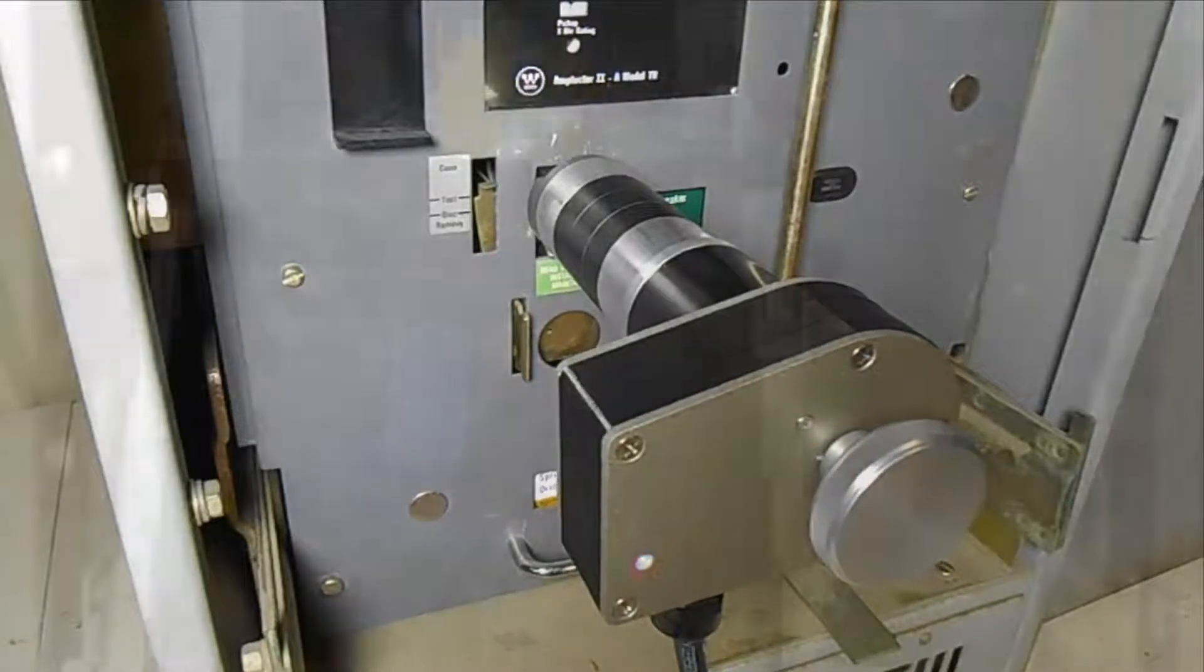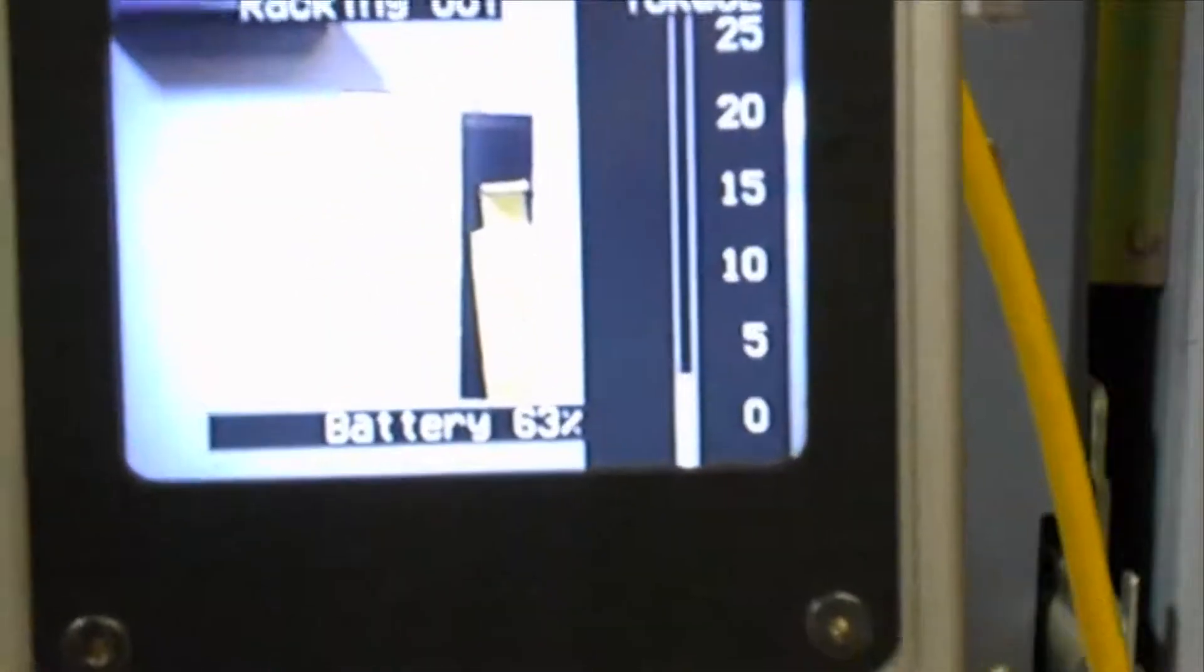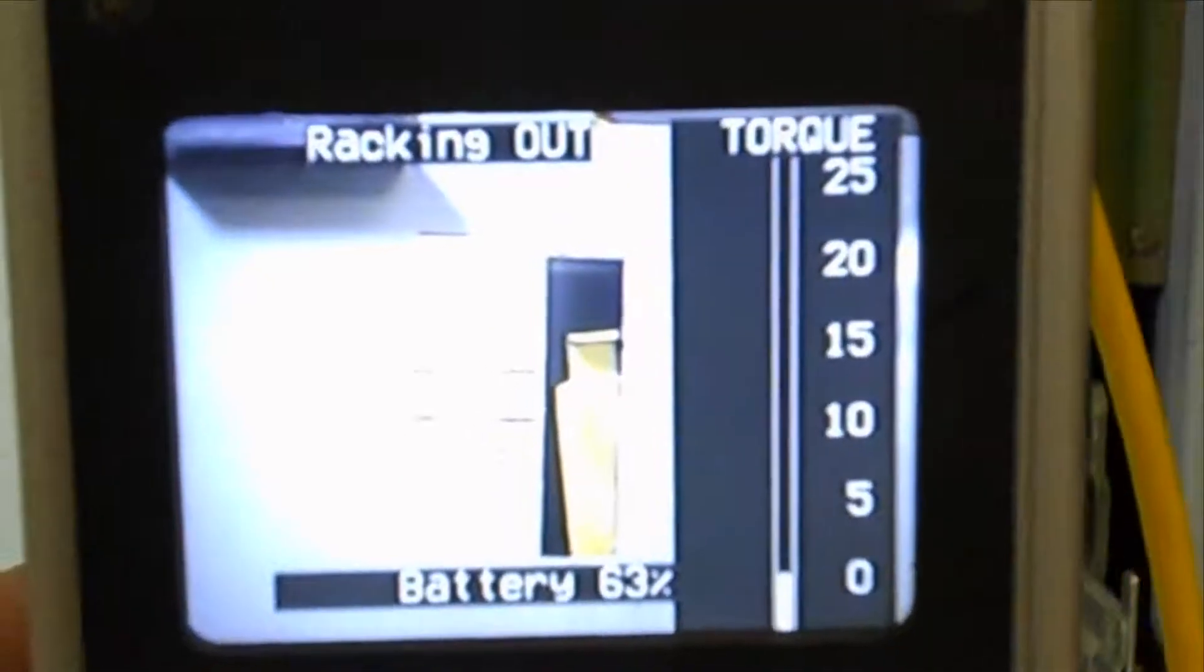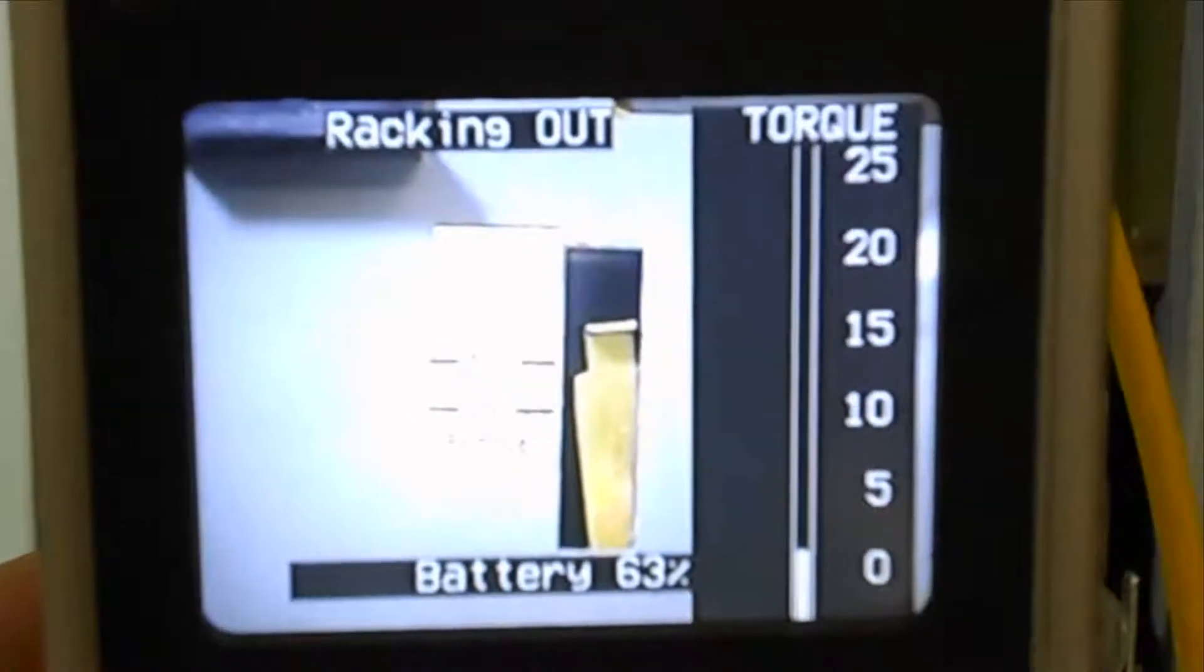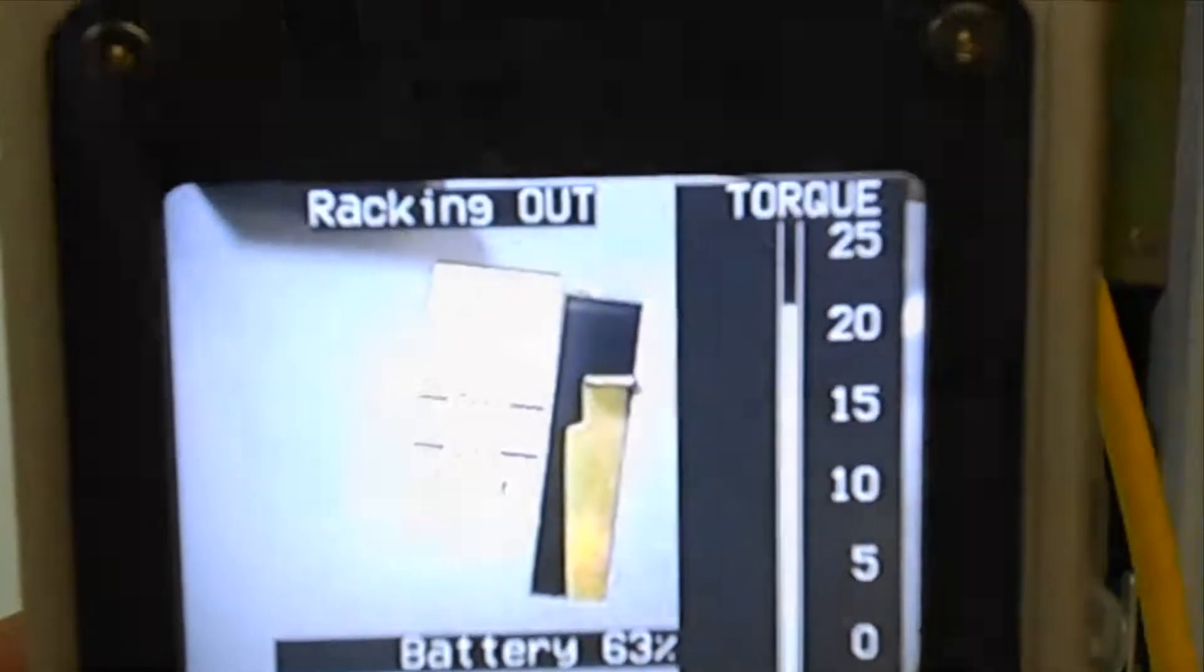In addition to displaying the breaker position indicator, the video display has a bar graph on the right side which indicates the current level of torque that is being applied to the racking mechanism.